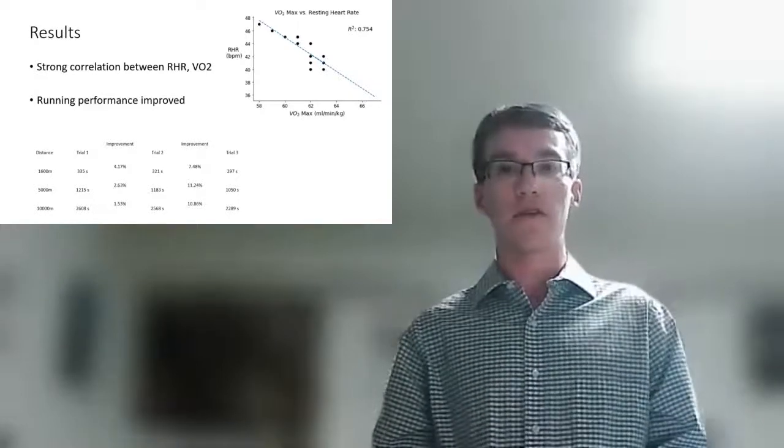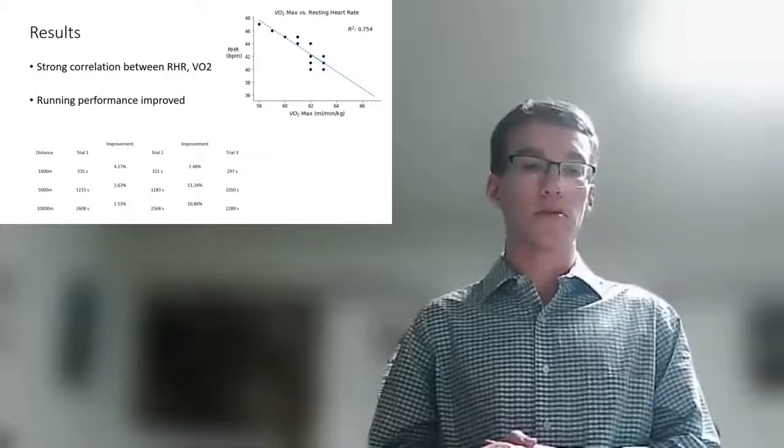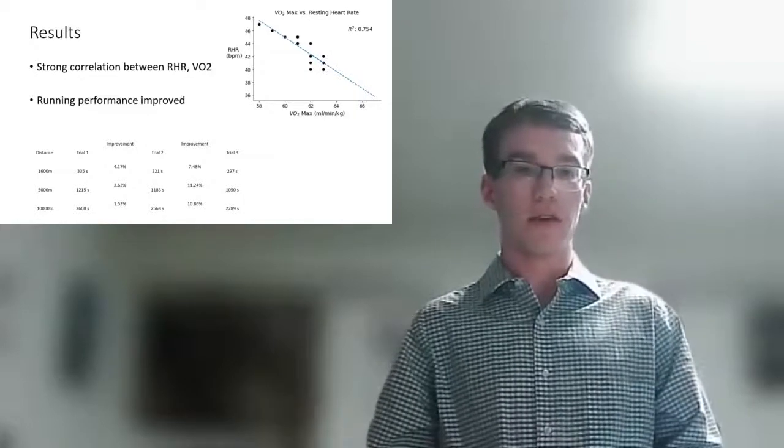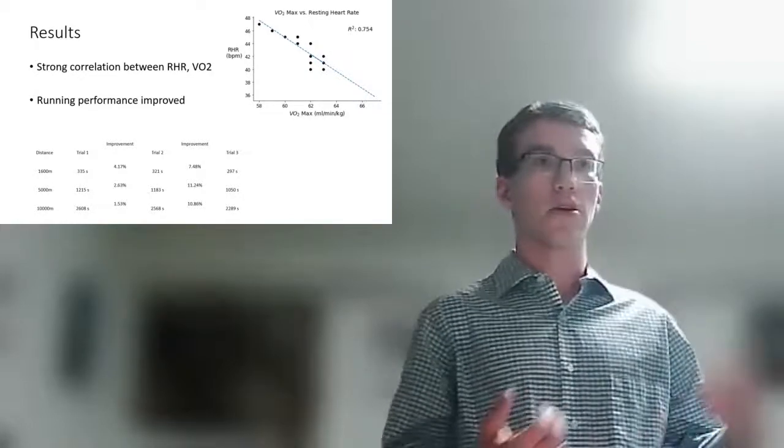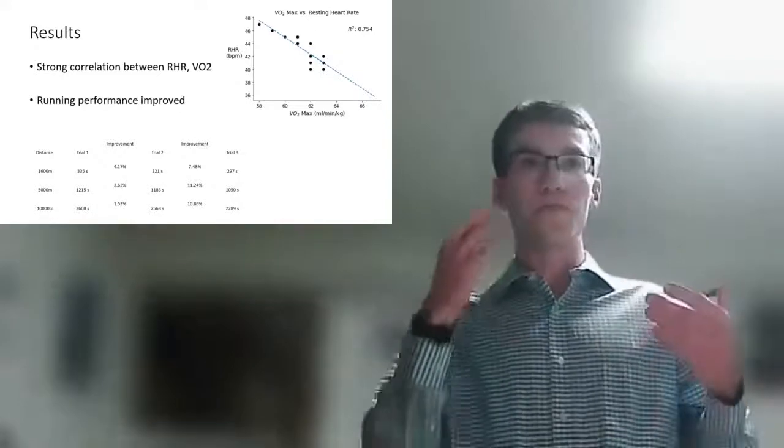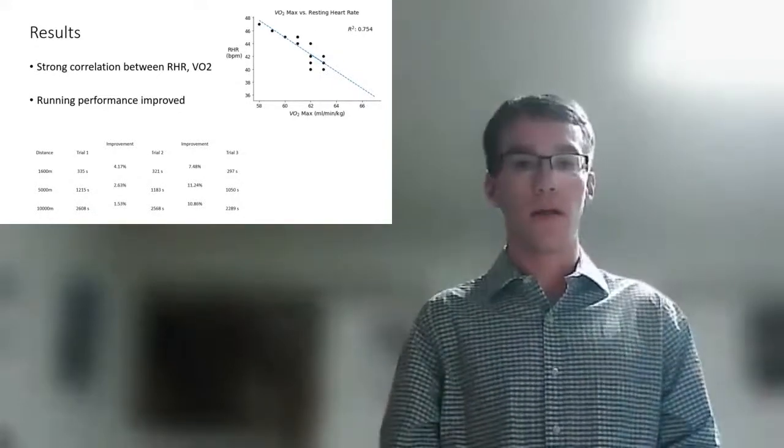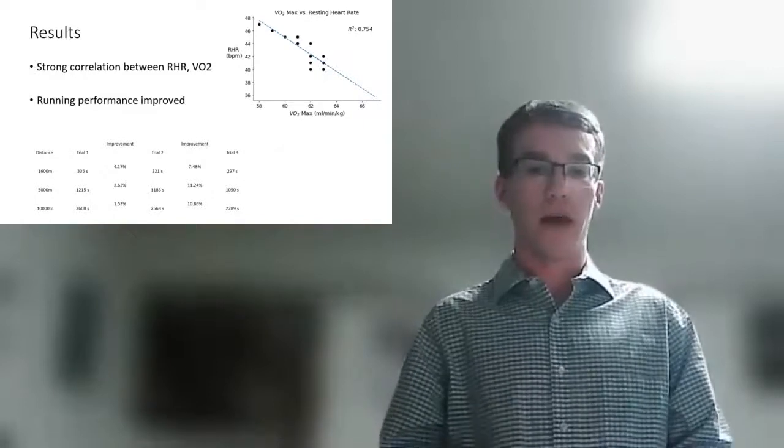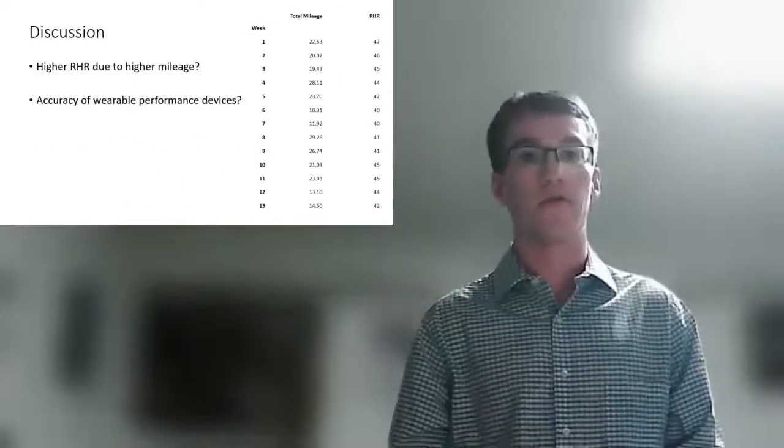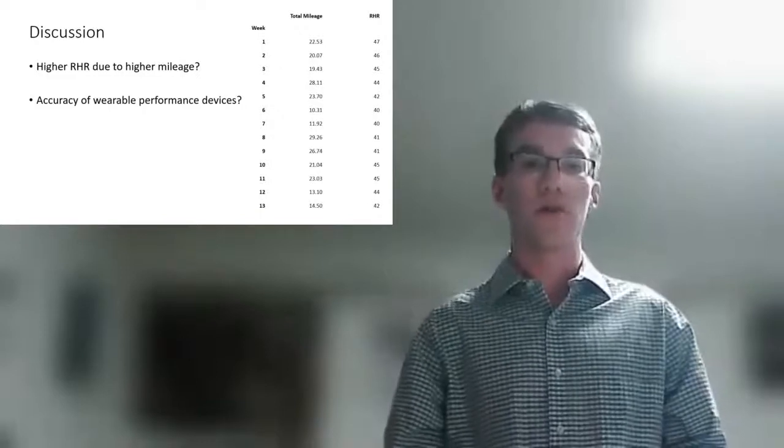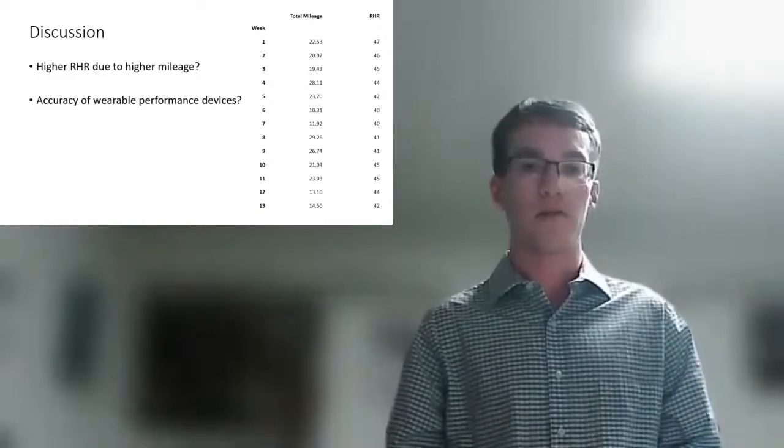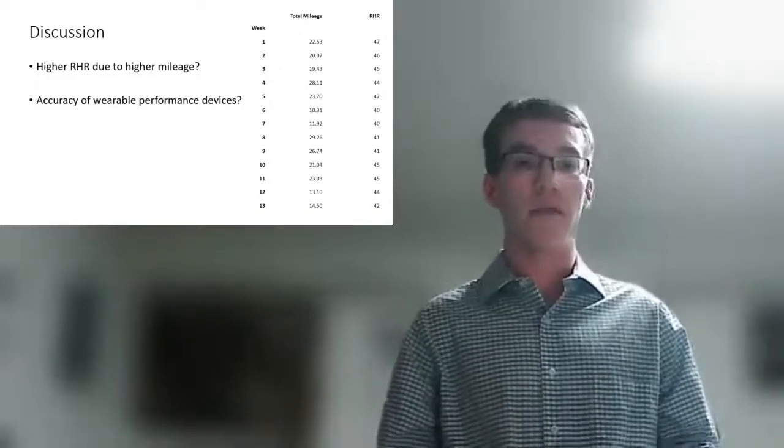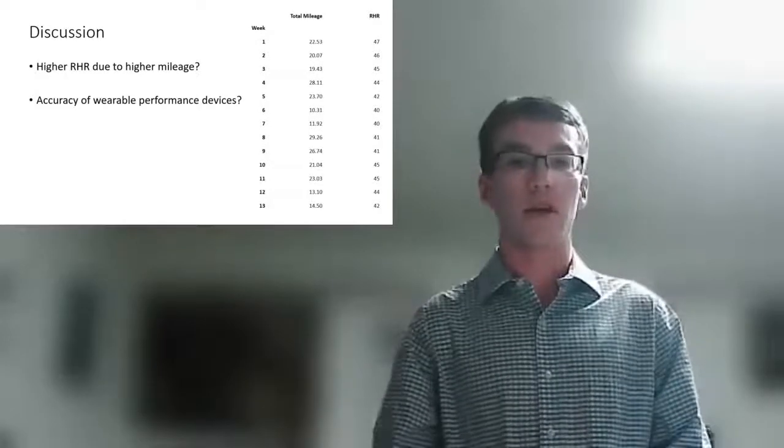Something that I could say from my research this summer is that I was able to improve my VO2 max and my resting heart rate, and that in turn helped me to also have greater running performance in the mile, the 5K, and the 10K. Some interesting notes from my research included the fluctuations that I saw in the VO2 max and the resting heart rate after the halfway point in my training period.